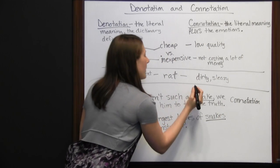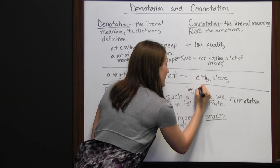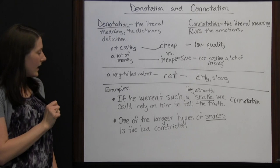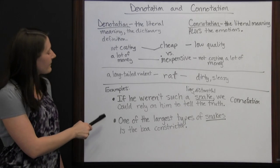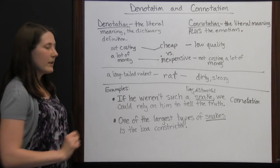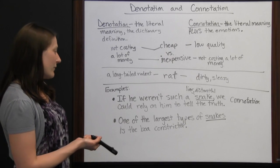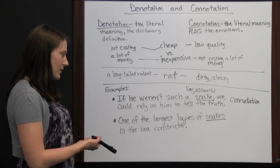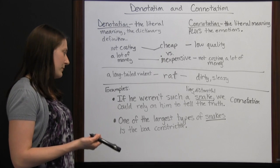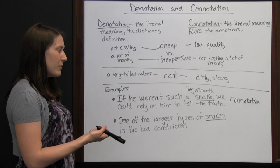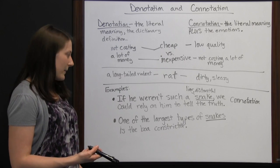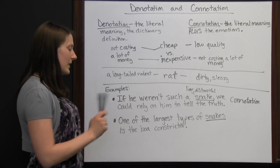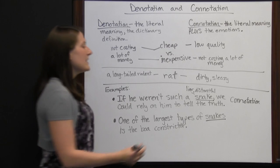Now let's look at the next sentence: 'One of the largest types of snakes is the boa constrictor.' Here, are we talking about reptiles or people who don't tell the truth? 'One of the largest types of people who don't tell the truth is the boa constrictor' doesn't make sense. This sentence gives you an example of an actual snake, so you can tell this is the literal meaning — the denotation.